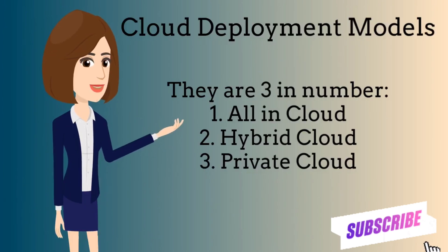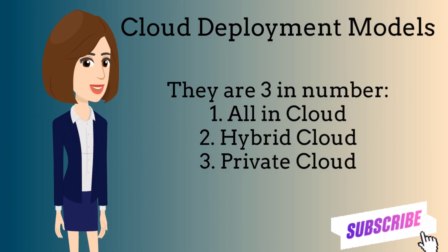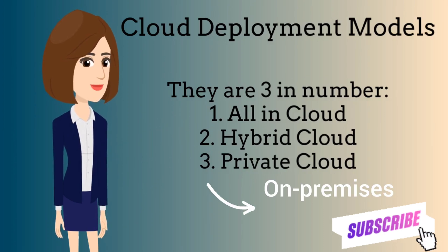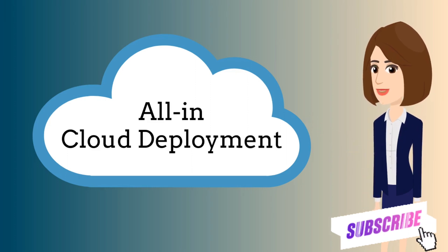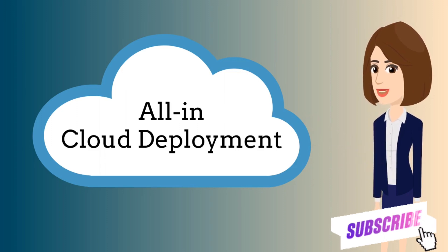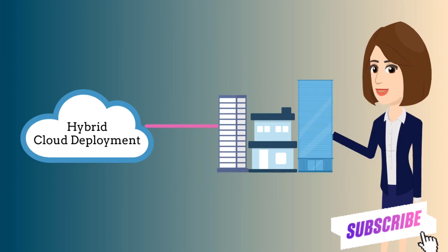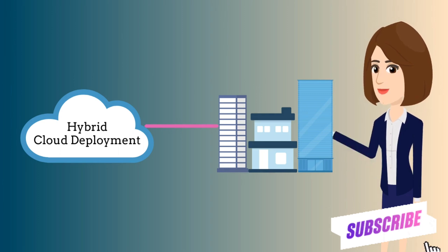The next topic in this video is cloud deployment models. There are three: all-in cloud, hybrid cloud, and private cloud, also known as on-premises cloud. All-in cloud is a cloud-based application fully deployed in the cloud where all parts of the application run in the cloud. These applications have either been created in the cloud or migrated from an existing infrastructure. A hybrid deployment connects infrastructure and applications between cloud-based resources and existing resources not located in the cloud, and is used to extend an organization's infrastructure into the cloud while connecting cloud resources to internal systems.